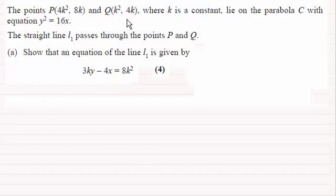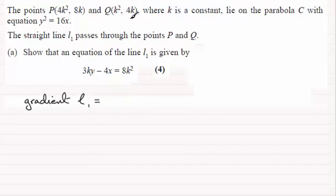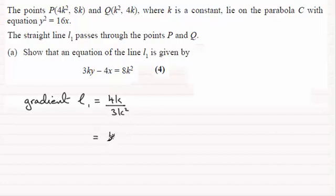This is just going to be the equation of a line where first of all we need to get the gradient. So the gradient of line L1 is equal to the difference in the y-coordinates divided by the difference in the x-coordinates. So that's 8k minus 4k for the difference in y-coordinates, which is 4k, divided by the difference in x-coordinates, 4k squared minus k squared, which is 3k squared. This is clearly equal to 4 over 3k. So now that we've got that, let's just border that off.